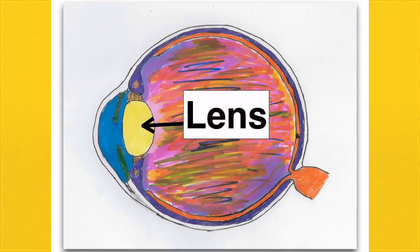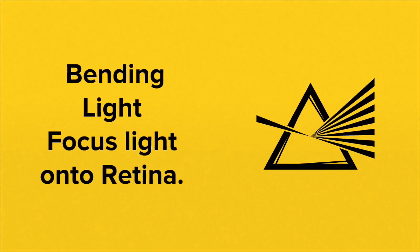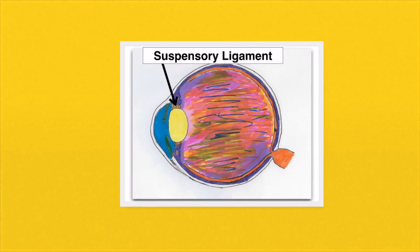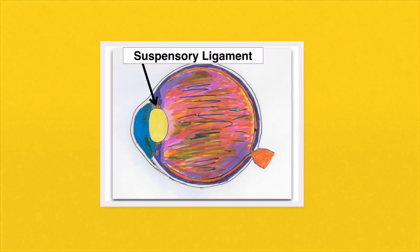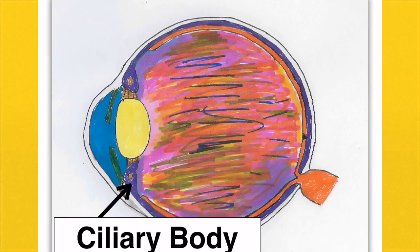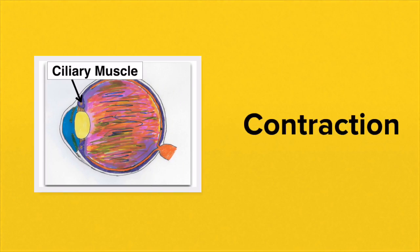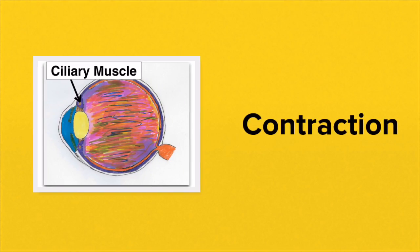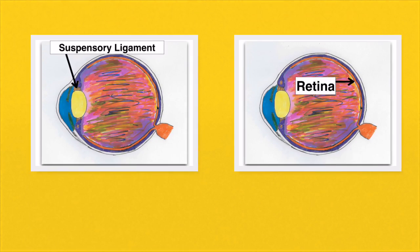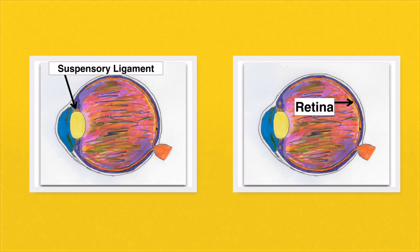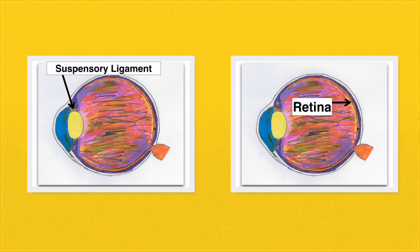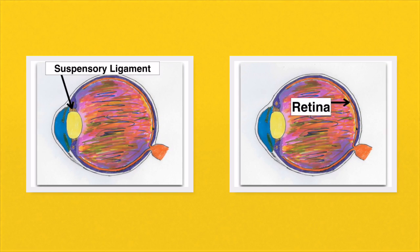Next we have the lens, which has the very important role of focusing light onto the retina. The lens is held in place by the suspensory ligaments. A section of the choroid layer at the front of the eye is known as the ciliary body. On the ciliary body is the ciliary muscle on either side of the lens. When this muscle contracts, it pulls on the suspensory ligaments, altering the shape of the lens, which is important in focusing light onto the retina.